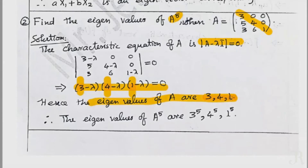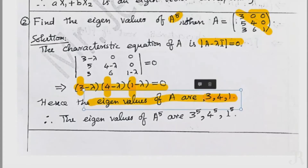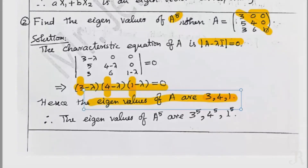What we observe is that this is a triangular matrix. The diagonal entries are 3, 4, 1, and the eigenvalues are also 3, 4, 1. So we conclude: the eigenvalues of a triangular matrix — whether upper or lower triangular — are its diagonal entries.